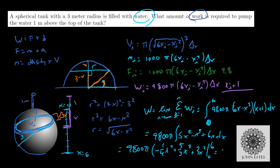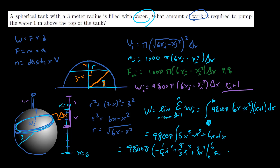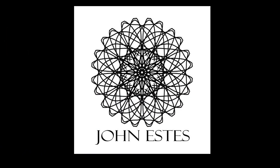And if you calculate that, you get approximately 4,433,916 joules. A better way of expressing this is 4.4 times 10 to the sixth joules. That gives you an approximation of the amount of work required to pump the water out of this tank. I hope this helps. If you have any questions, let me know and I'd be glad to try to answer them.